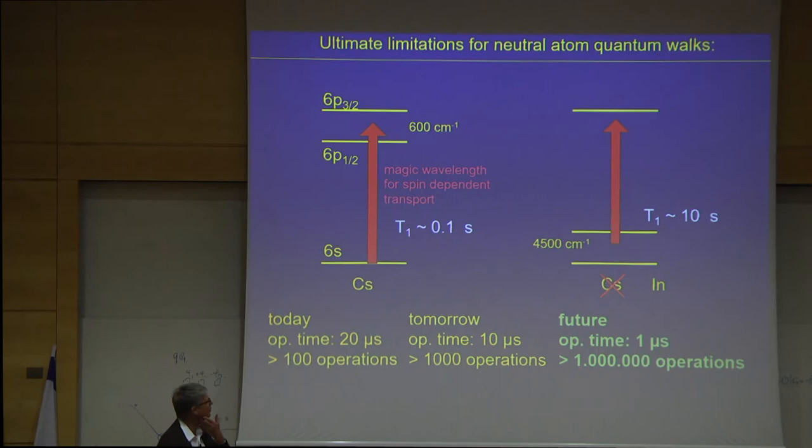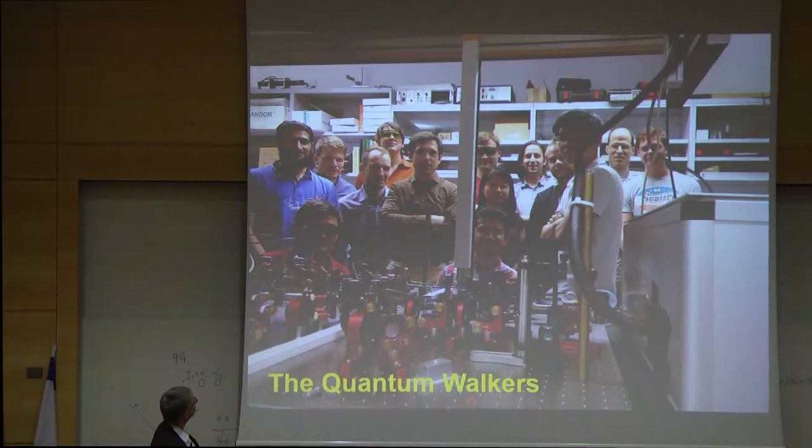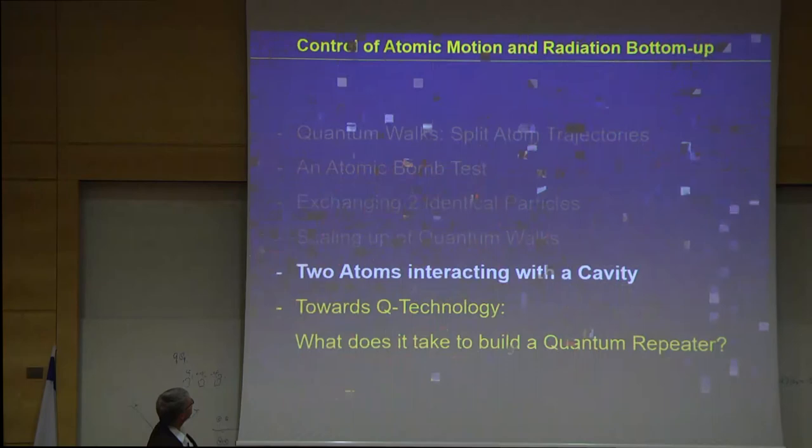And so if we achieve 1 microsecond, we should be able to do 1 million operations. When we started all this out, we were thinking of quantum cellular automata. And of course, we forgot completely about this. But maybe in 10 or 20 years, it may come up again that we would be able to realize these kinds of objects. I would like to say Andrea Alberti really is a very strong driving force in this field and making a lot of good progress in this experiment.